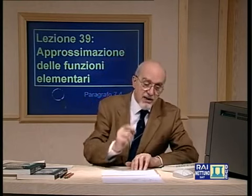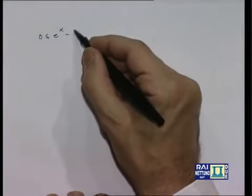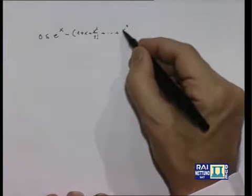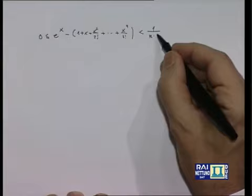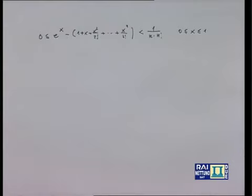La disuguaglianza 0 ≤ e^x - (1 + x + x²/2!) ≤ ··· [polinomio di Taylor] non è vera soltanto per x=1, ma per tutti gli x dell'intervallo [0,1]. Vediamo come si possa sfruttare questa informazione per stimare in modo approssimato la funzione e^x per un qualsivoglia x reale, sia positivo o negativo.